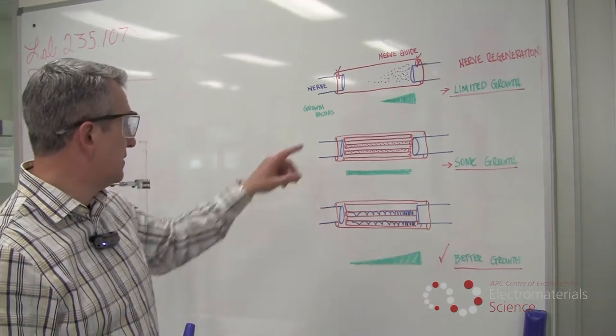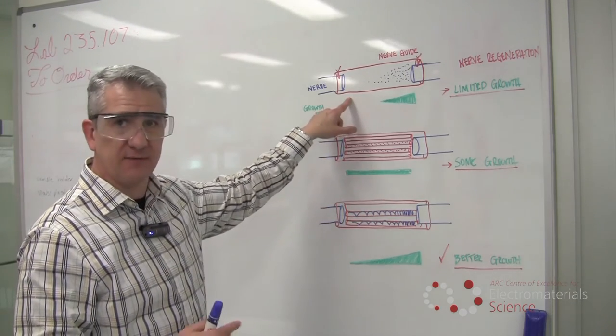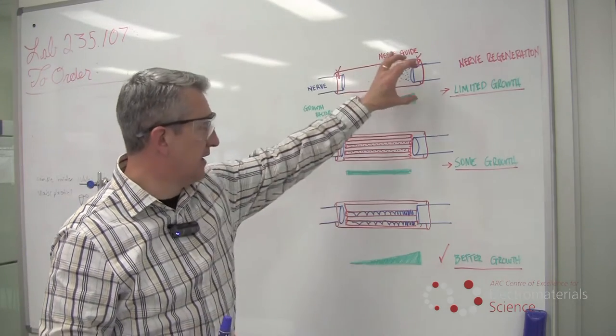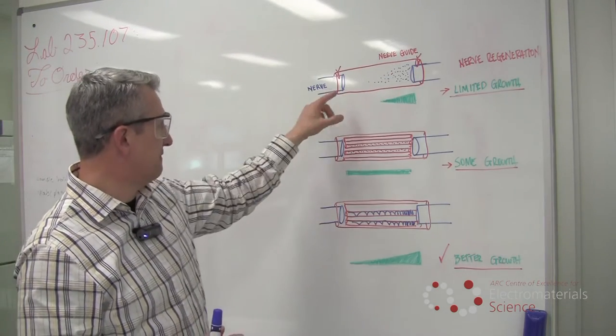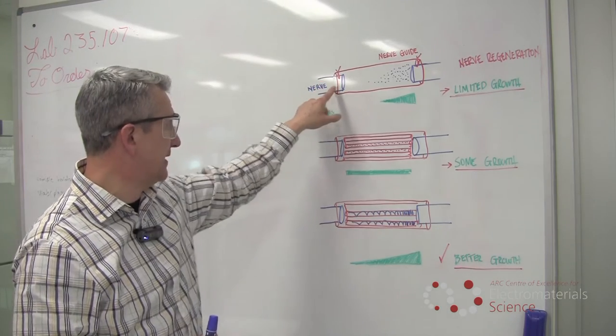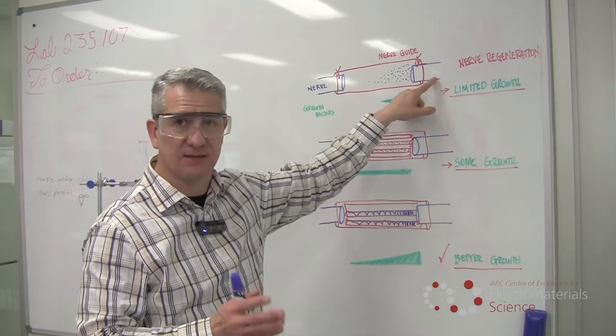Now, the limitation to that approach at the moment is that in the clinic, what is available is a nerve guide. It's basically a sleeve that is sutured to the proximal end and the distal end of the transected nerve.